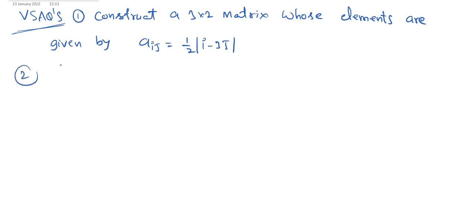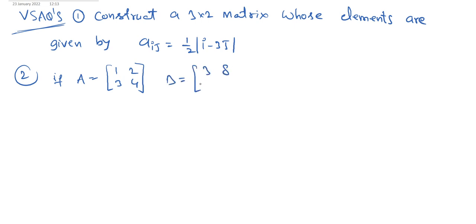Second question: if capital A = [1, 2; 3, 4] and capital B = [3, 8; 7, 2], and 2X + A = B, then find X.